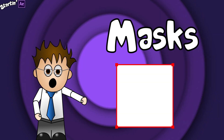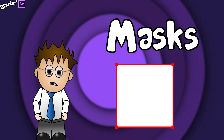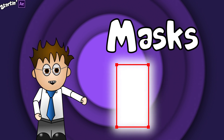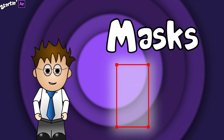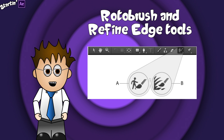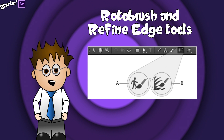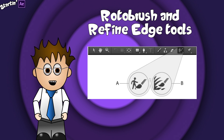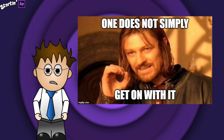Masks are arguably one of the most important tools After Effects provides, mainly because you can keyframe them. This means you can change their shape, size, feathering and even opacity. Before the roto brush, they were the quickest, easiest way to rotoscope in After Effects. There are still occasions when I'll use an animated mask rather than roto brush. Okay, enough intro — let's jump into After Effects.